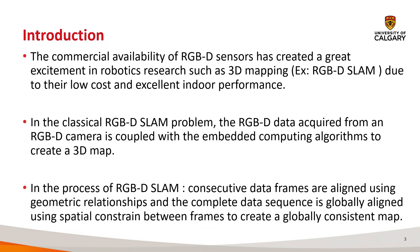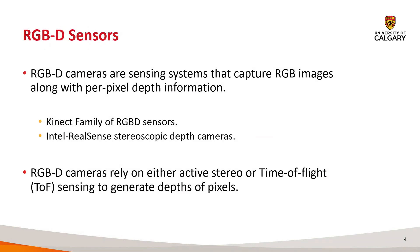In this process we collect all the information frame by frame, then align all the frames together to make a complete map, while at the same time tracking the pose of the camera. An RGBD sensor is a camera that provides an RGB image and depth information, giving per-pixel depth information of the image.